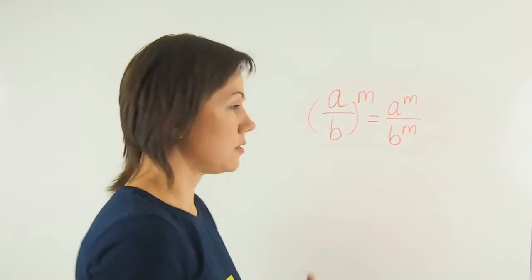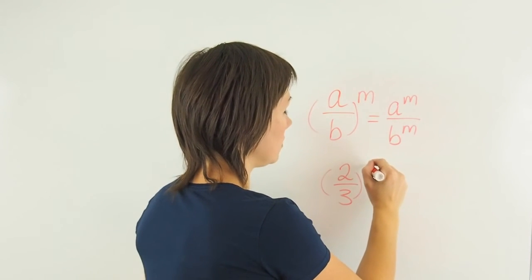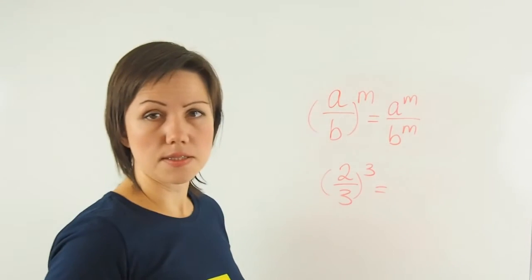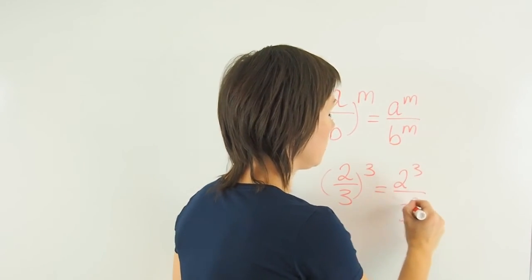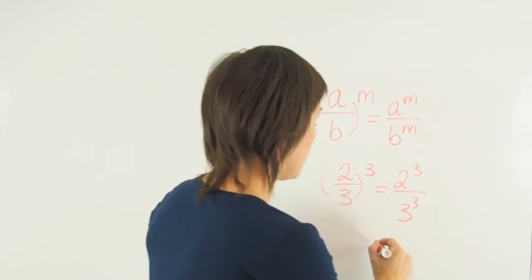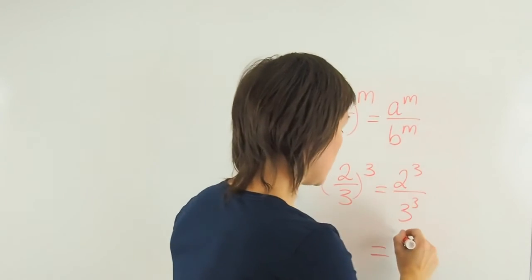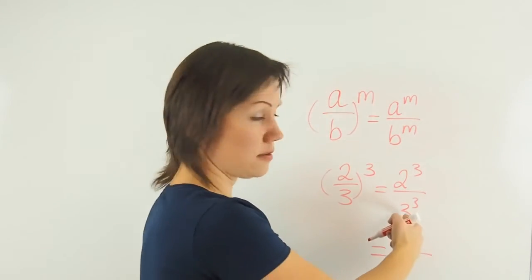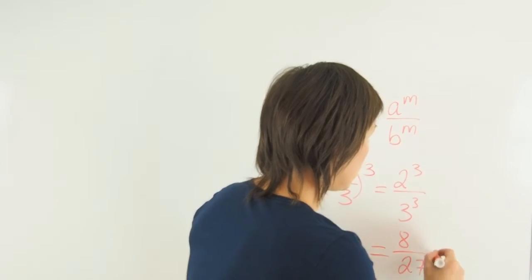For example, if you have a fraction 2 over 3 to the power of 3, it means that it's 2 cubed and 3 cubed. So that equals 2 times 2 times 2, which is 8, and 3 times 3 times 3, which is 27. So the answer is 8 over 27.